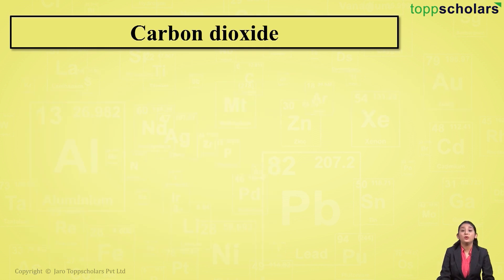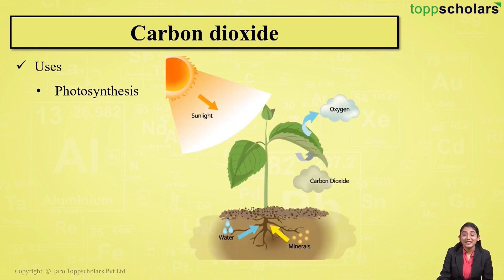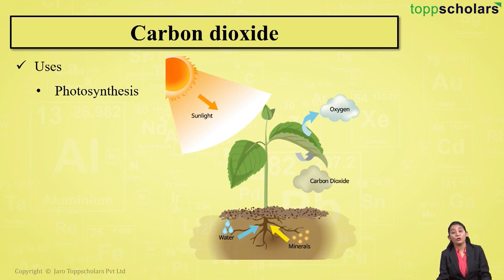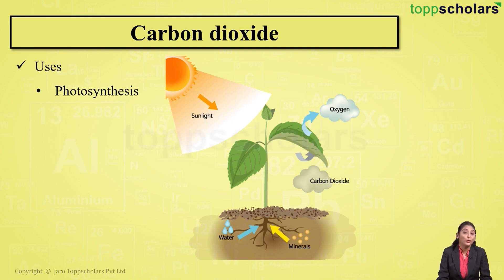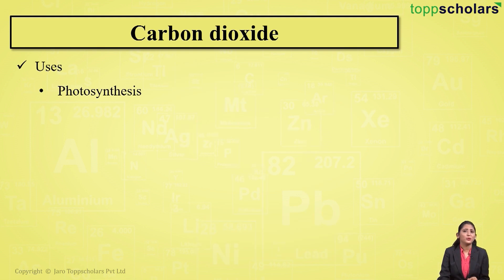But is carbon dioxide useful to us? Let's have a look at the uses of carbon dioxide. Carbon dioxide is necessary for the process of photosynthesis. Photosynthesis is the process wherein green plants make use of carbon dioxide and water in the presence of sunlight, resulting in the formation of glucose and oxygen.